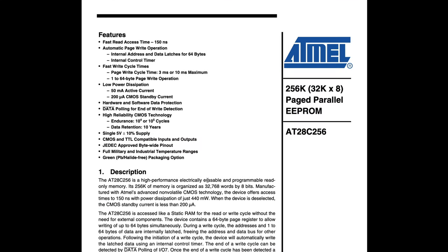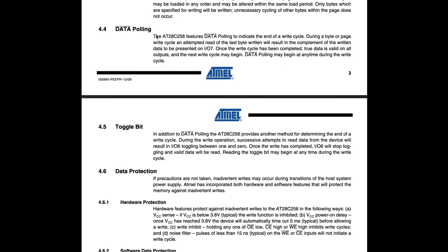That's the reason why there are two different ways to detect the end of a write cycle. If we look at the datasheet for the EEPROM, we can see that we can do data polling to indicate the end of a write cycle, but we can also do toggle bit. During the write operation, successive attempts to read from the device will result in pin number 6 on the data bus toggling between 1 and 0. Once the write is completed, pin 6 will stop toggling and valid data will be read. So in the case that we've written an incorrect byte, we can still use toggle bit to check when the write operation is finished, because it will just stop toggling at some point — independent from reading the correct byte. So we have to switch from data polling to toggle bit.